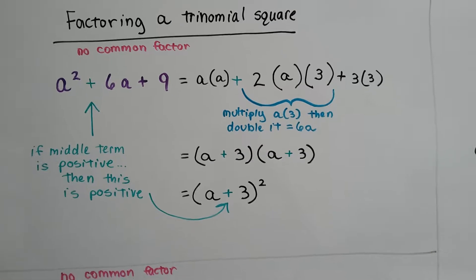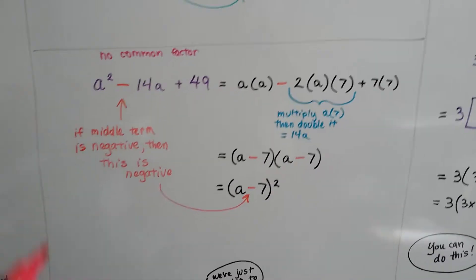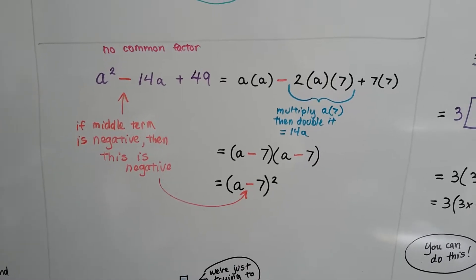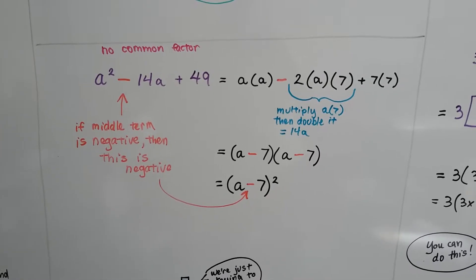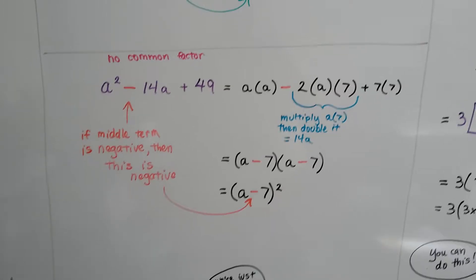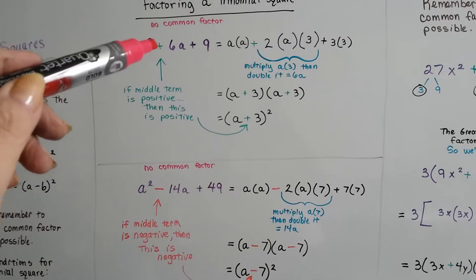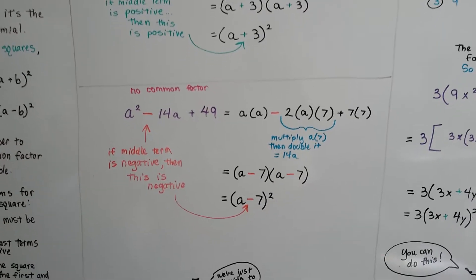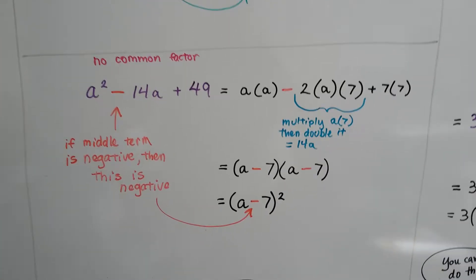Let's try this again. Now there's going to be a minus sign for the middle term. So if the middle term is negative, then that means for our binomial square, it's going to be negative. It's a rule to remember. If it's positive for the middle term, then that's going to be positive. If it's negative for the middle term, then that's going to be negative.